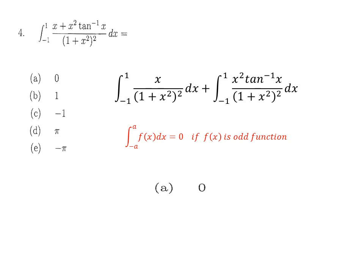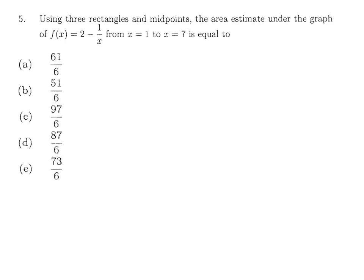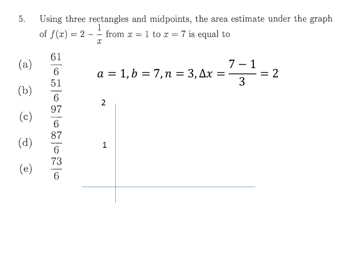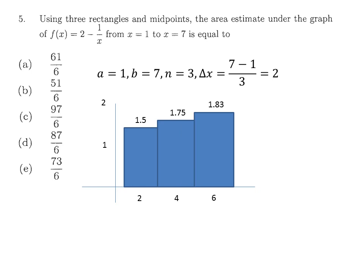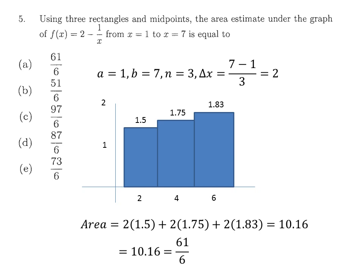For question 5, we use three rectangles with the midpoint rule to estimate the area. With a=1, b=7, and n=3, delta x equals 2. The midpoints are 2, 4, and 6. At x=2 the height is 1.5, at x=4 it is 1.75, and at x=6 it is approximately 1.83. The estimated area equals 61/6, so part A is the answer.